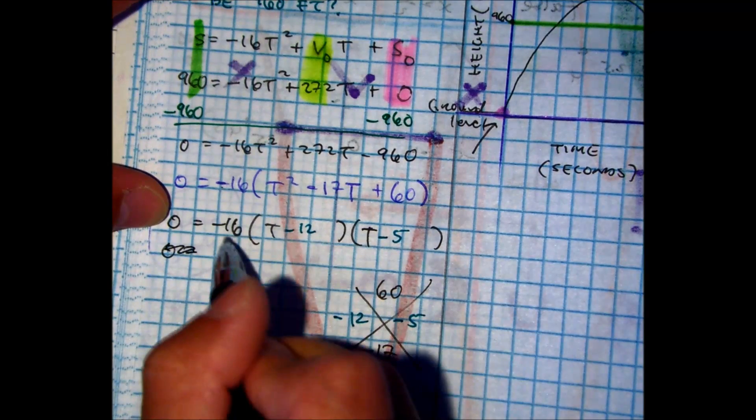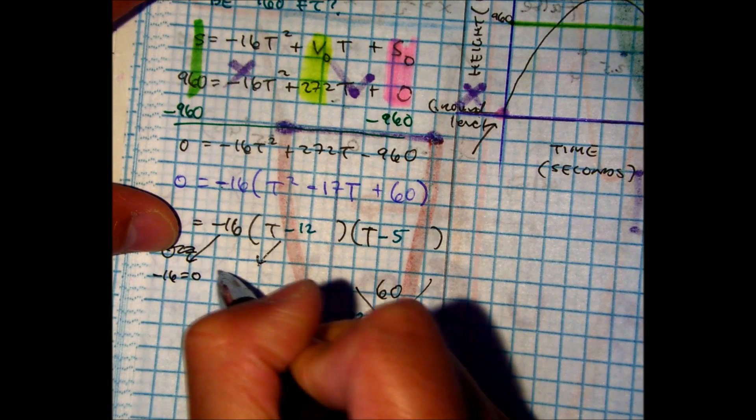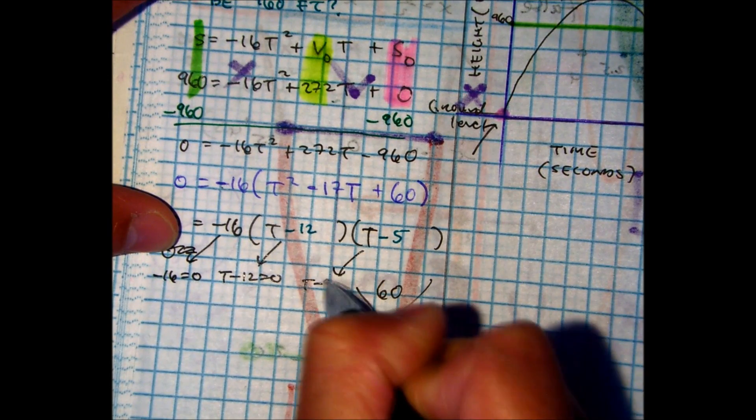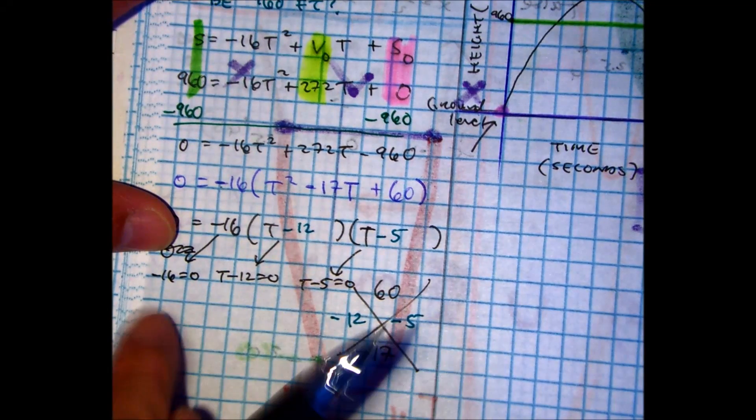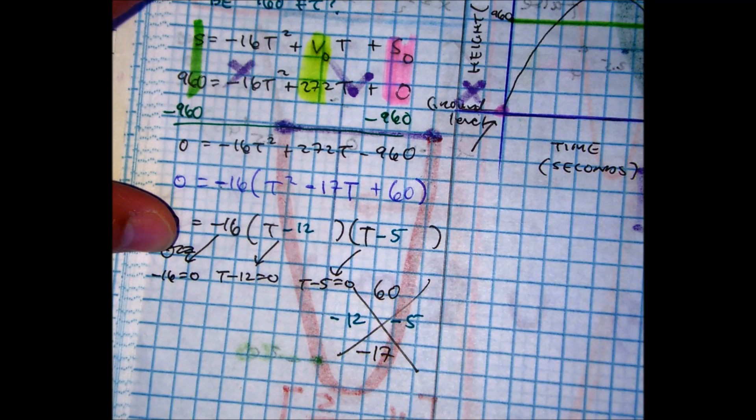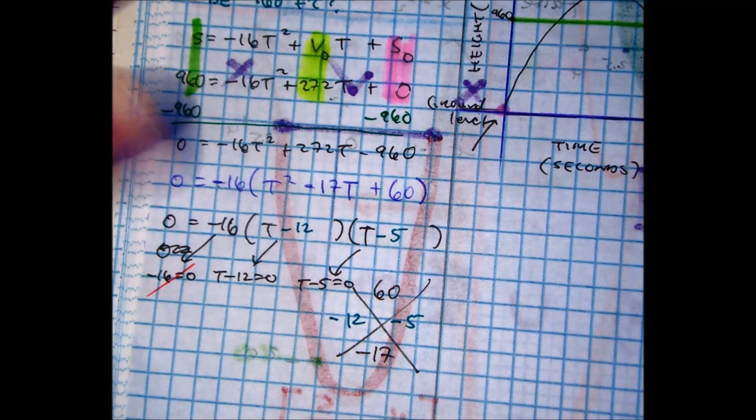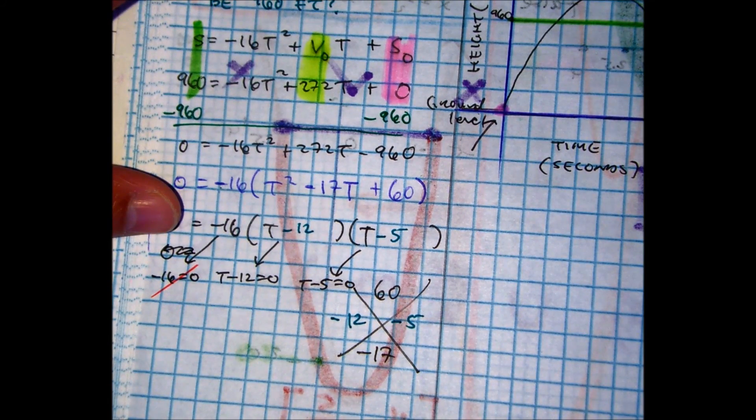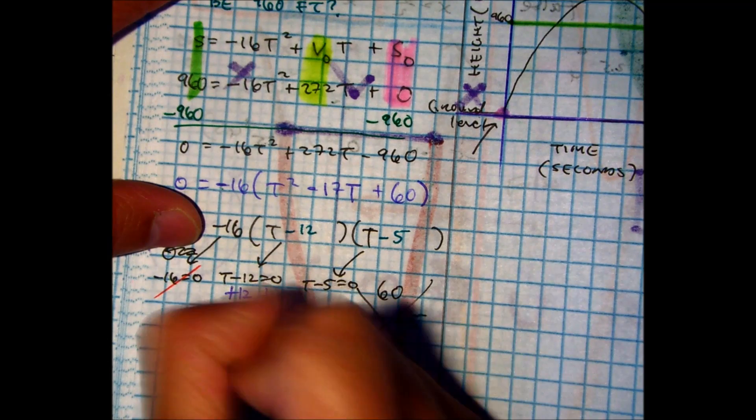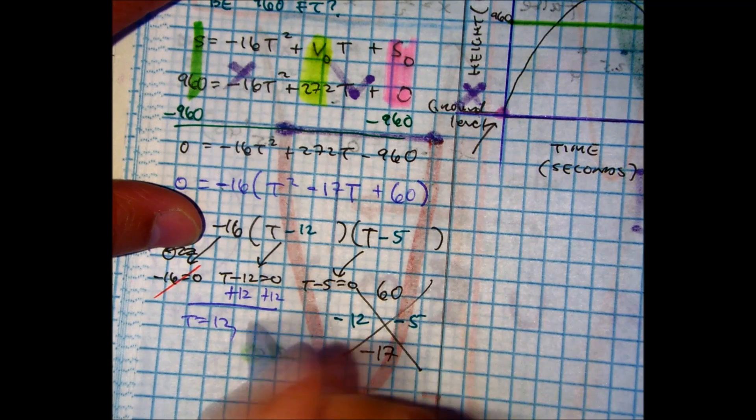Now I'm just going to use the zero product rule. I'm setting each of those equal to zero. Negative 16 equals zero. T minus 12 equals zero. T minus 5 equals zero. Can negative 16 ever equal zero? No. That's false. So the greatest common factor doesn't really do anything. If I add 12 here, I get T equals 12. And over here, I'll get T equals 5.